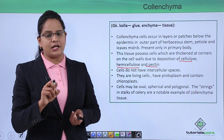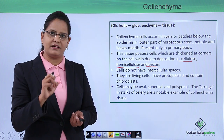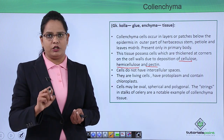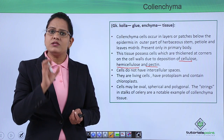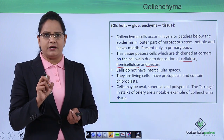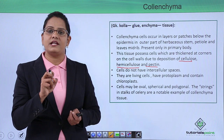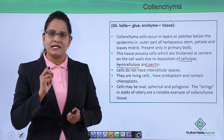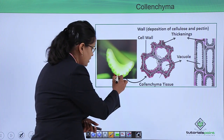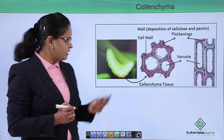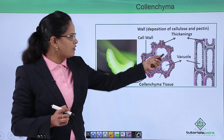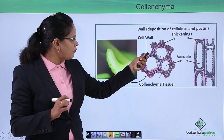Unlike parenchyma, colenchyma cells do not have intercellular spaces. The shape of the cells can be oval, spherical, or polygonal. Have you ever seen celery? Celery is a little harder compared to coriander — the strings you feel are colenchyma cells, responsible for the crunchiness of celery. This portion of the celery stalk contains colenchyma, and when seen under the microscope, you can see thickenings of cellulose, hemicellulose, and pectin in the form of patches, along with a large vacuole.